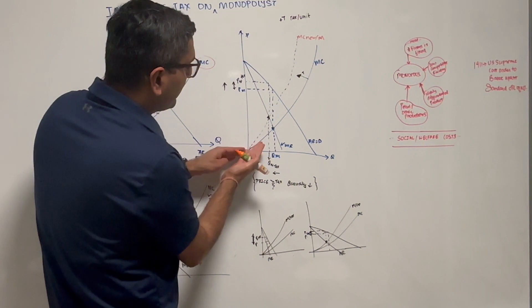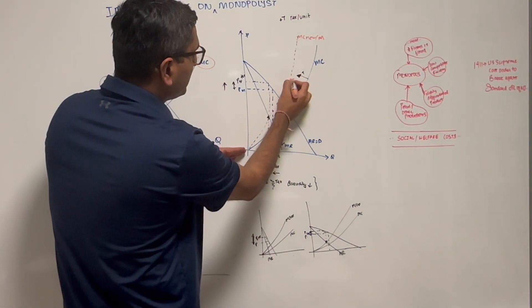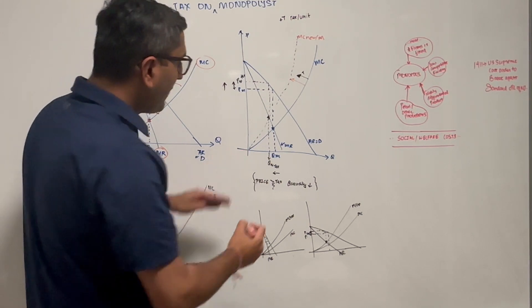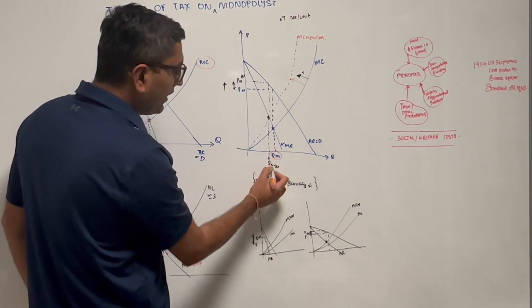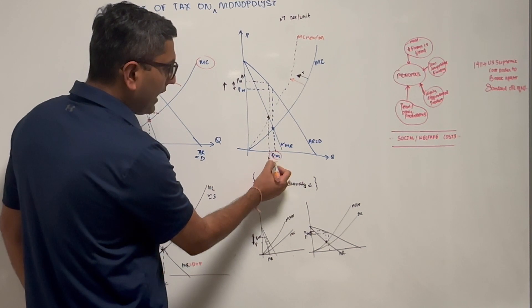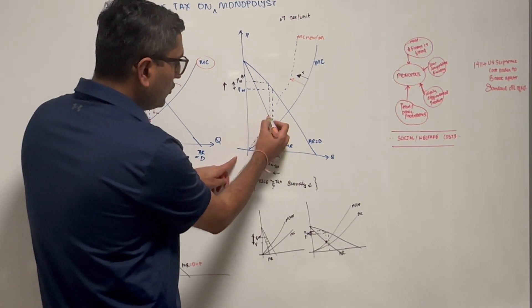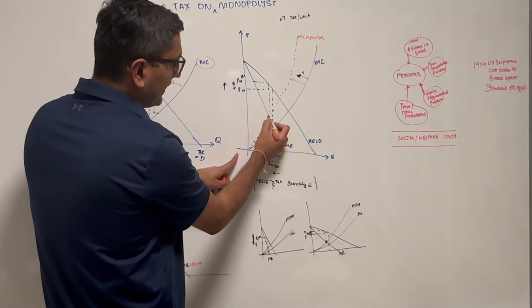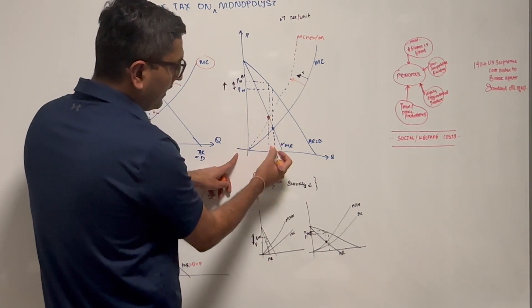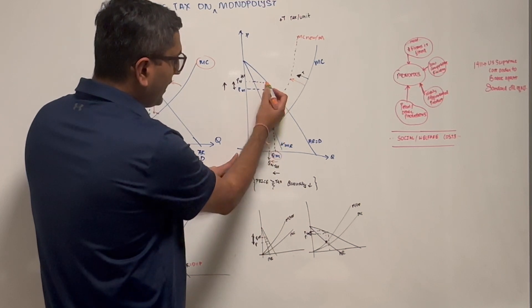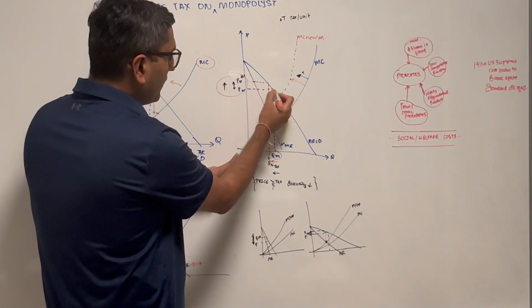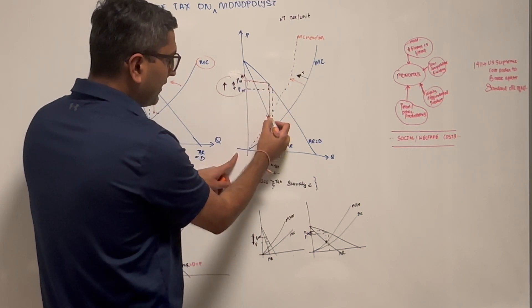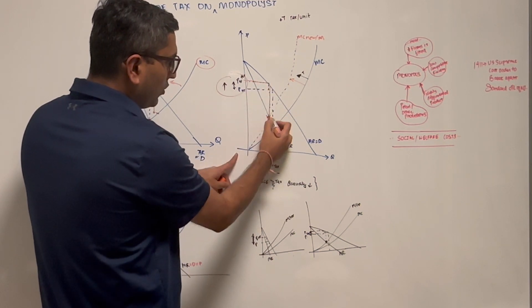In essence, this curve shifted up because it's going to cost them more per unit. So what happens is the quantity will now reduce. Why? Because this new marginal curve will intersect at a much higher point at a reduced quantity, and the price will also go up. So this new intersection point will have a price that is much higher and a quantity that's much lower.